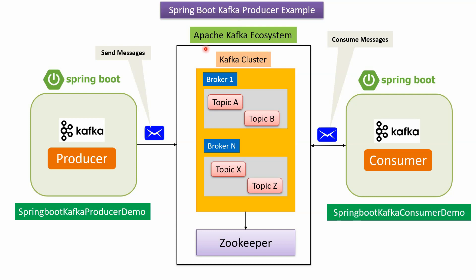Here you can see the Apache Kafka ecosystem. It has a Kafka cluster. The Kafka cluster has brokers and each broker has topics. Here you can see the Spring Boot application — the Spring Boot application name is Spring Boot Kafka Producer Demo.